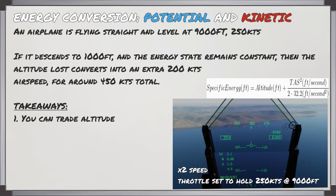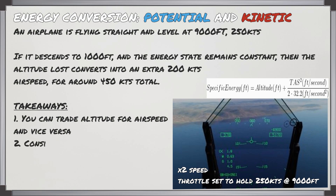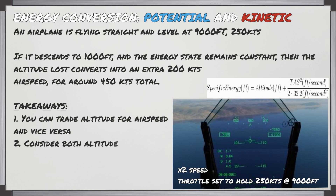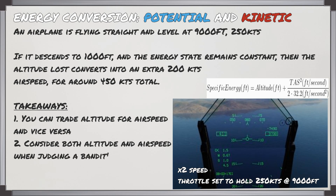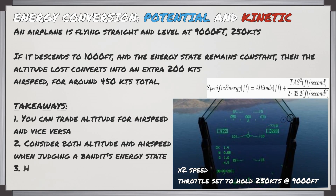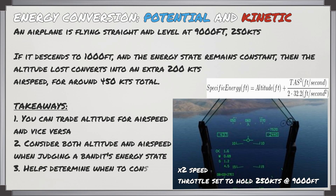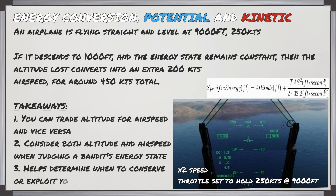The main takeaways from this demonstration are that you can trade your altitude for airspeed and vice versa. You should be considering both altitude and airspeed when judging a bandit's energy state relative to your own, because this will help you determine when to conserve your energy or when to exploit it to improve your position in a dogfight.